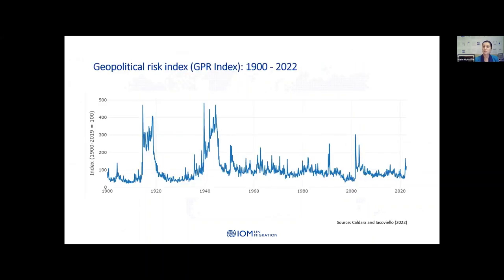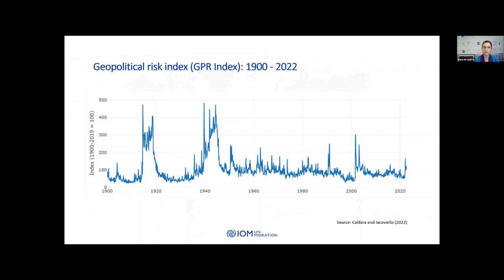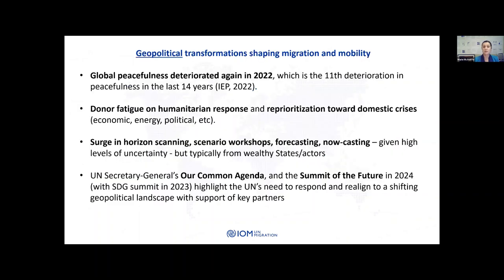If we take a quick look at the geopolitical risk index — this is the long-term view from 1900 through to September 2022 — we can see the two world wars as well as 9/11 featuring very strongly. Zooming in towards the 2000s, the current geopolitical risk index is very high, mainly due to Russia's invasion of Ukraine but also other impacts around the world. Global peacefulness has also deteriorated; the Institute of Economics and Peace tracks this, and unfortunately in 2022 we've seen another deterioration, which is the 11th in the last 14 years. Donor fatigue is at an all-time high, with many donors re-prioritizing towards domestic crises such as economic and energy crises.